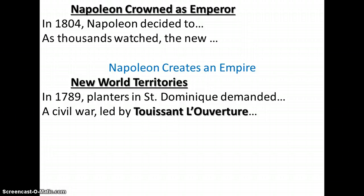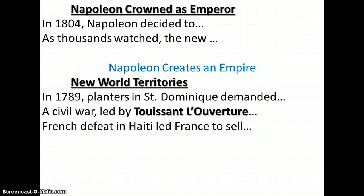A civil war led by Toussaint Louverture — a black slave — who seized control. Napoleon fails in stopping the revolution. On the Caribbean island of Saint-Dominique, planters were demanding more rights, slaves demanded freedom, and a civil war ensued in which the black slaves who had come over from Africa, working in the sugar cane fields, seized control. Toussaint led this slave revolt and Napoleon failed in stopping the rebellion.